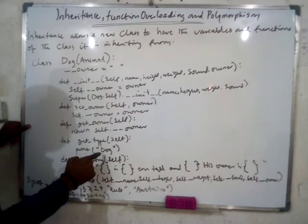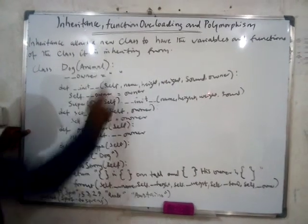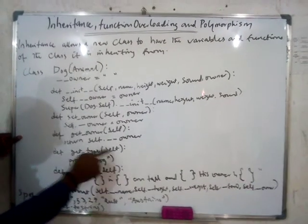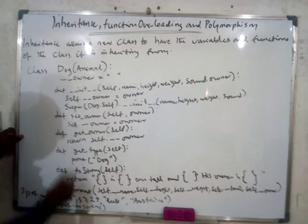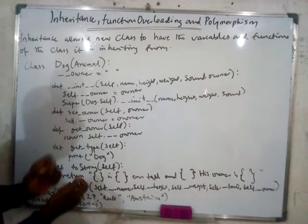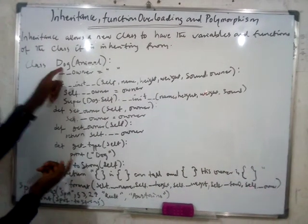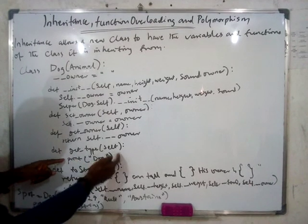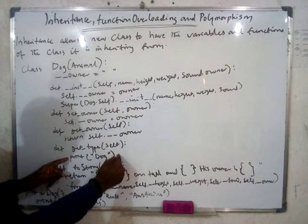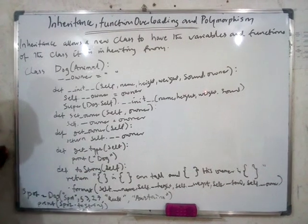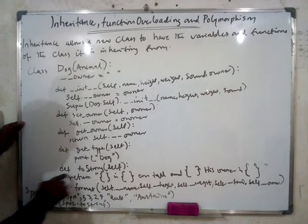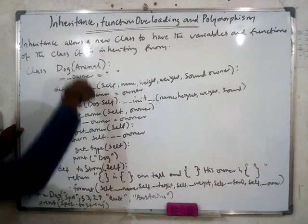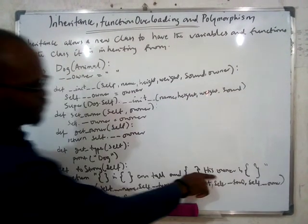The getType function was in the former Animal class — it printed 'animal'. When you overload it by now saying that getType should print 'dog', not 'animal', you see that both of them have the same function — the Animal and the Dog — but in the Dog class you are changing what getType should print. You overload it. So now you are also writing the string function, which is also in Animal, but you are adding the 'owner' field.